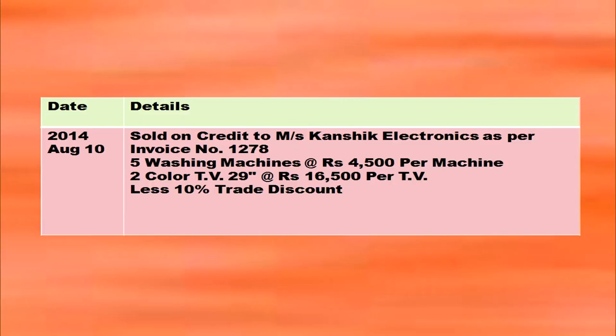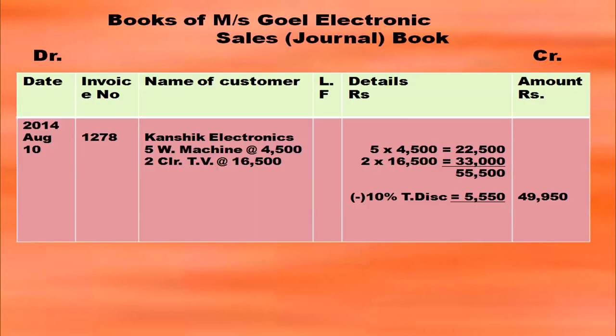Sold on credit to Messrs Kanishk Electronics — this comes in the sales book with trade discount deducted. 5 washing machines at Rs. 4,500: 5 × 4,500 = 22,500. 2 colour TVs at Rs. 16,500: 2 × 16,500 = 33,000. Total: 22,500 + 33,000 = 55,500. Less 10% trade discount: 55,500 × 10/100 = 5,550. Net amount: 55,500 − 5,550 = 49,950 in the amount column.